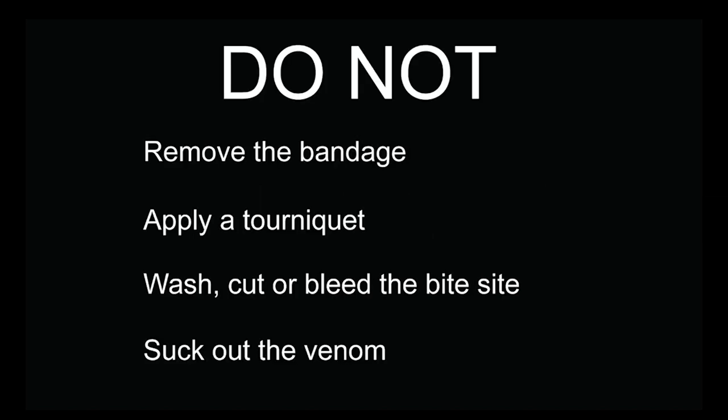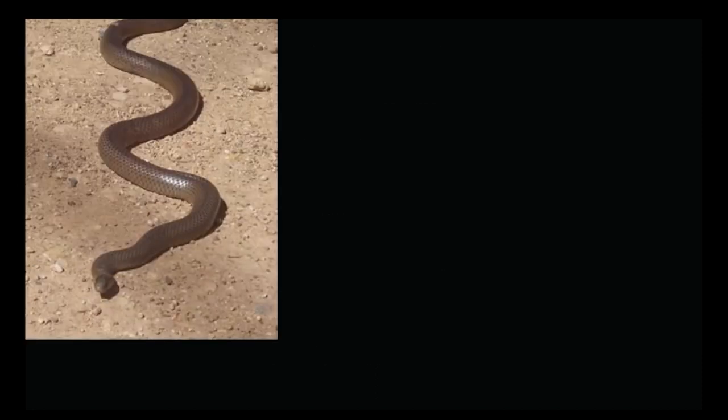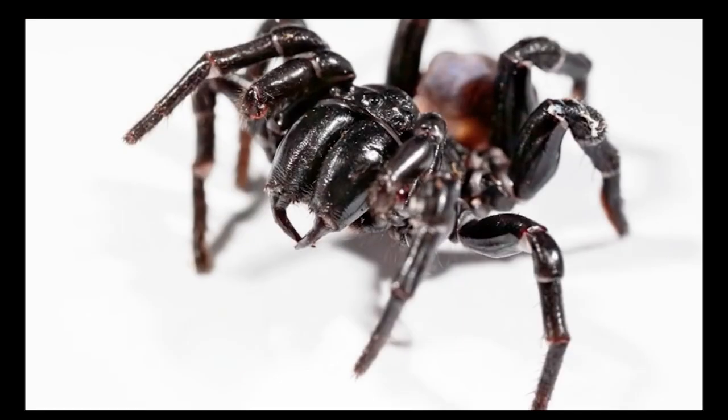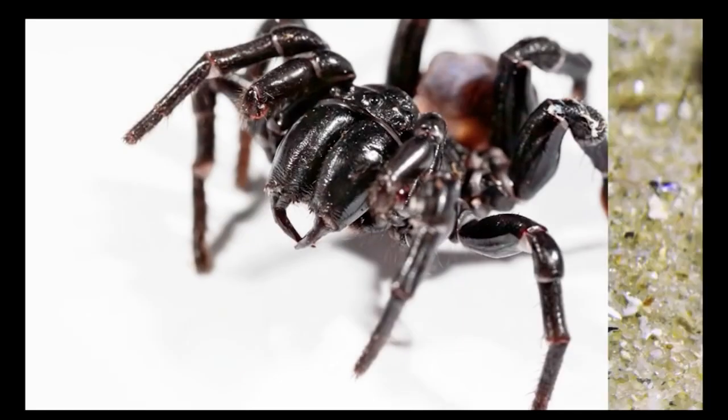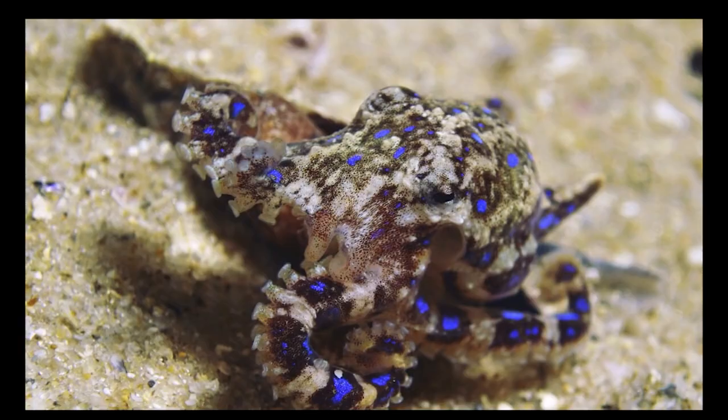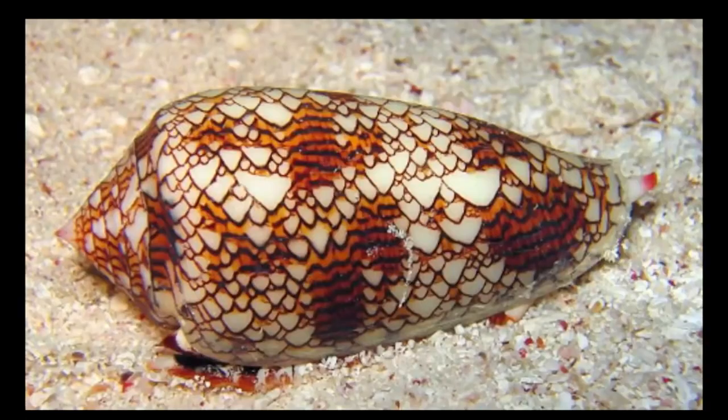Do not remove the bandage once applied. Do not apply a tourniquet. Do not wash, cut or bleed the bite site. Do not suck out the venom. The pressure immobilisation technique is recommended for all Australian venomous snake bites, funnel web spider bites, blue-ringed octopus stings, and cone shell stings.